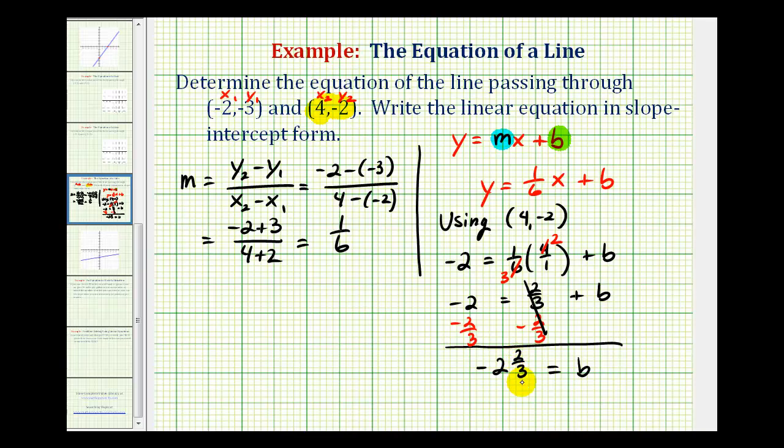Or if we want, we can convert this to an improper fraction. We'd have b equals the negative fraction with a denominator of three. And then for the numerator, we'd have three times two plus two, which would be eight.